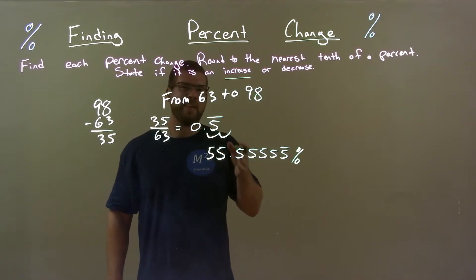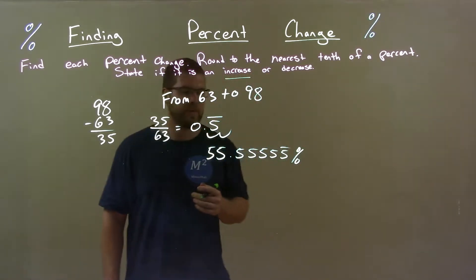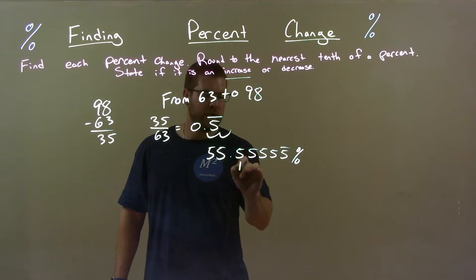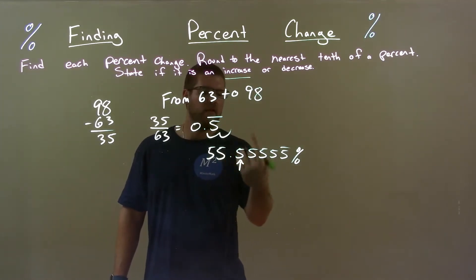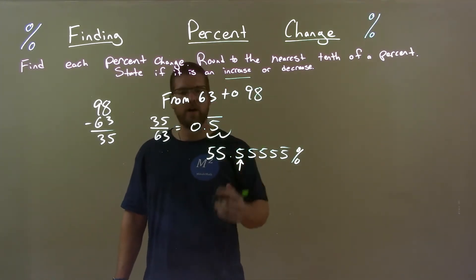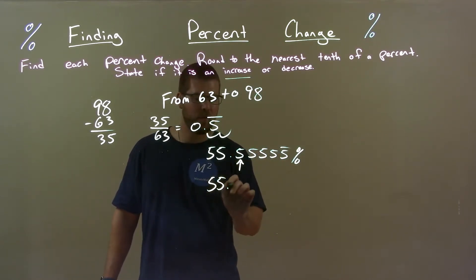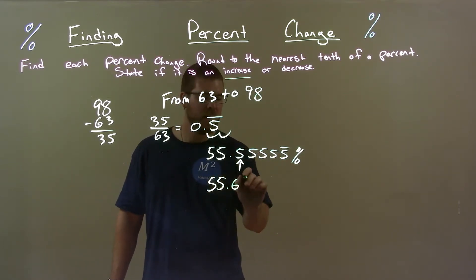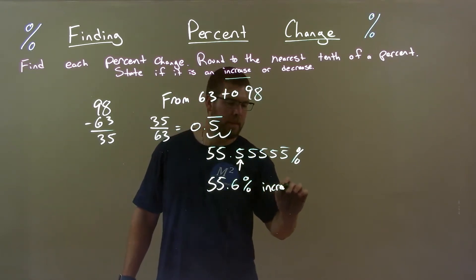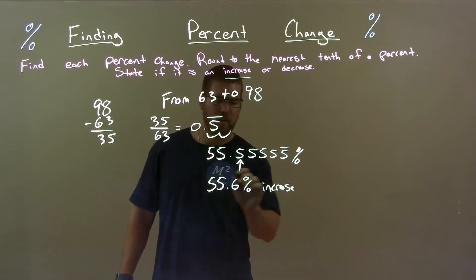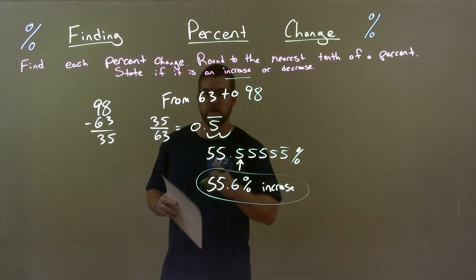Now we need to round that to the nearest tenth of a percent. We look at the tenth position — that five. The five to the right causes this five to go up one. So we actually have 55.6 percent. We said that was an increase — 55.6 percent increase.